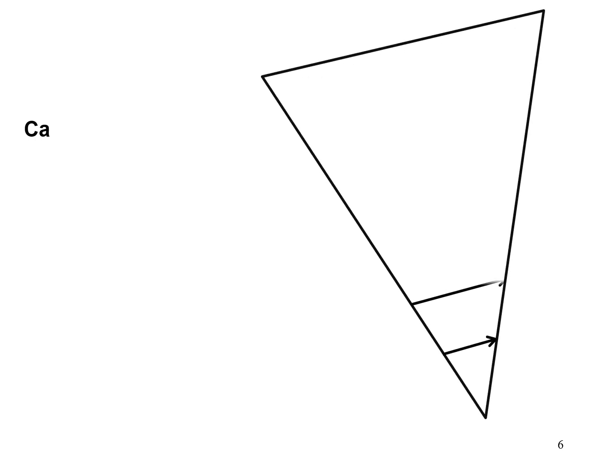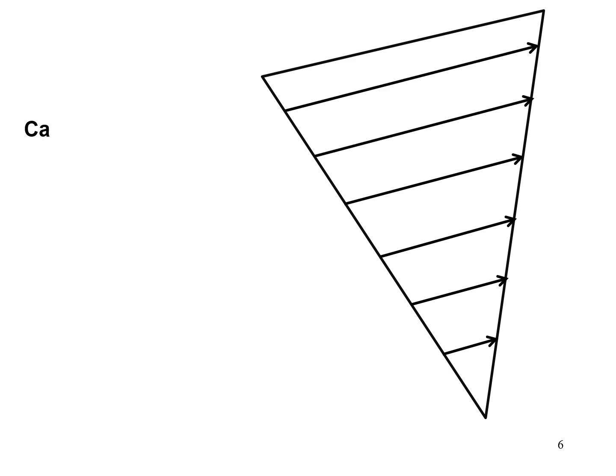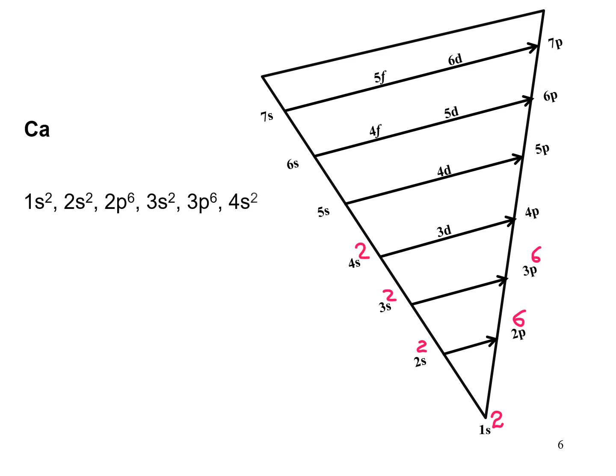Let's take the example of calcium. The atomic number of calcium is 20. Starting from the bottom of the energy level diagram: 1s², 2s², 2p⁶, 3s², 3p⁶, and 4s². That distributes all 20 electrons. So the electronic configuration of calcium is 1s² 2s² 2p⁶ 3s² 3p⁶ 4s².